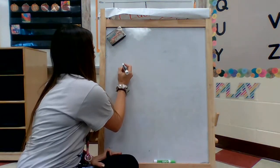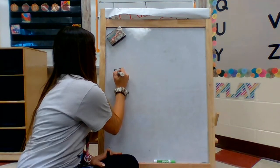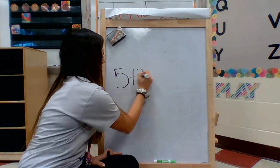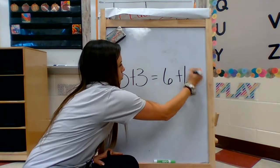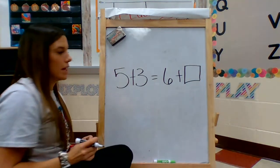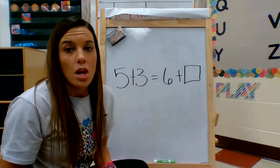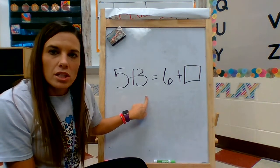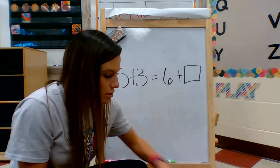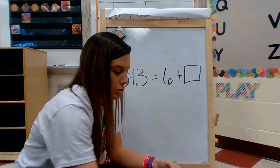I'm going to say 5 plus 3 equals 6 plus we don't know. We have to find that answer. So my first equation, 5 plus 3.